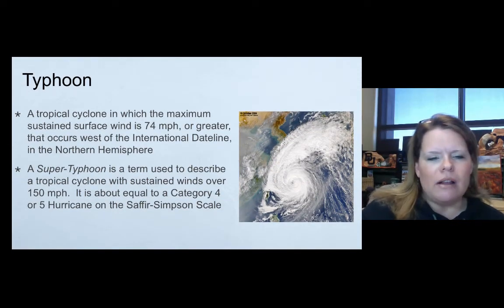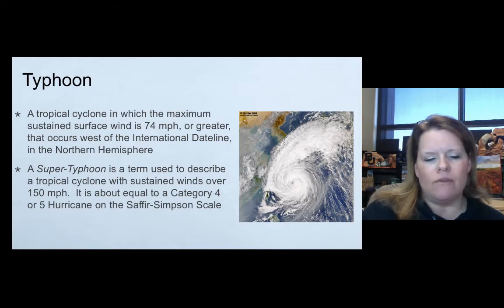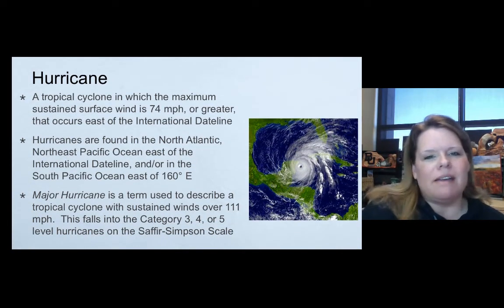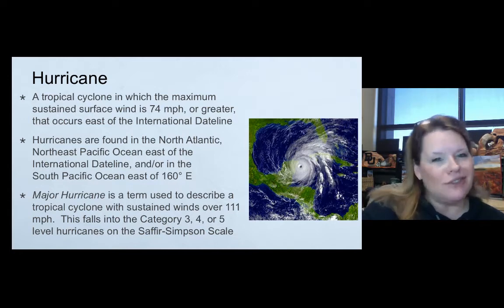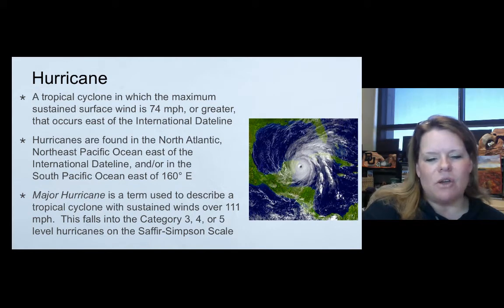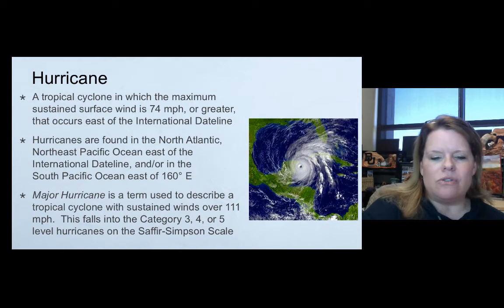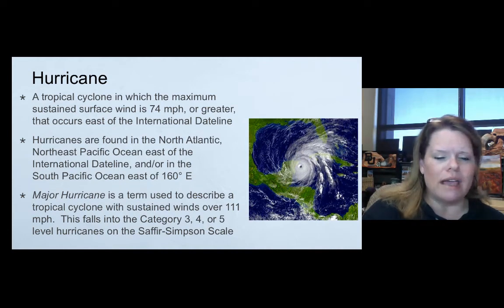A typhoon is a tropical cyclone with maximum sustained winds of 74 miles per hour or greater occurring west of the international date line in the northern hemisphere. A super typhoon has sustained winds over 150 miles per hour — roughly equivalent to a category 4 or low category 5 hurricane on the Saffir-Simpson scale. A hurricane is a tropical cyclone with maximum sustained winds of 74 miles per hour or greater east of the international date line. A major hurricane has sustained winds over 111 miles per hour — that's category 3, 4, and 5 on the Saffir-Simpson scale.